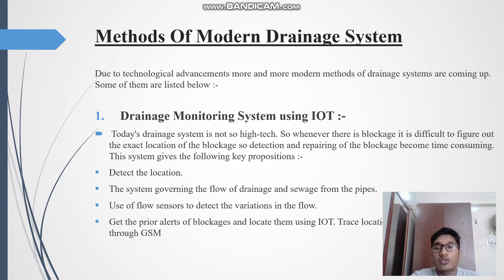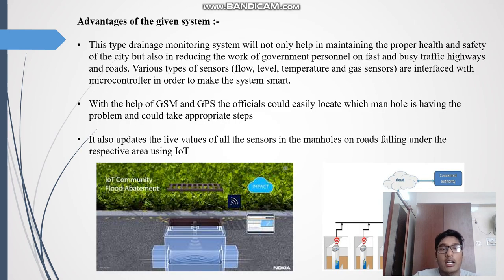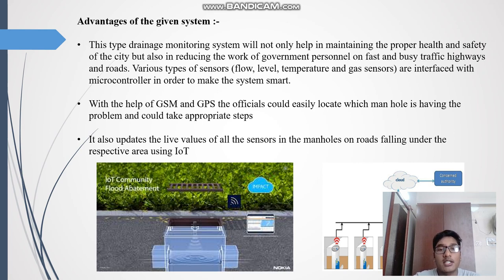Today's drain systems are not high tech, so whenever there is a blockage it is difficult to figure out the exact location, making detection and repair time consuming. This system gives the following propositions: first, detect the location, then govern the flow of drainage and sewage from the pipes, then use flow sensors to detect variations in flow, get prior alerts on blockages, locate them using IoT, trace location using GPS, and send SMS through GSM. This type of drainage monitoring system will not only help in maintaining the proper health and safety of the city but also in reducing the workload of government personnel. Various sensors — flow, level, temperature, and gas — are interfaced with a microcontroller. With the help of GSM and GPS, officials could easily locate which manhole is having the problem and take appropriate steps, updating live values of all sensors on roads using IoT.